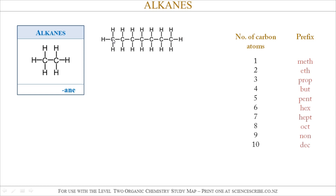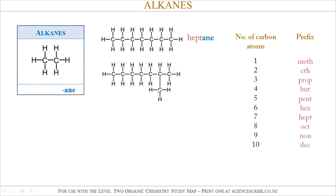In another example, this time I've got seven carbon atoms as my longest chain, so I expect that to be HEPT, and since it still ends with -ANE, I expect the name of that molecule to be Heptane. In another example, don't be fooled by any side groups — go for the longest chain. My longest chain is still seven carbon atoms long, so I expect this molecule to have the word Heptane in there somewhere.